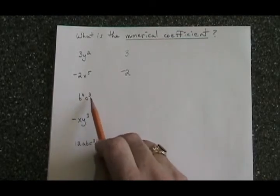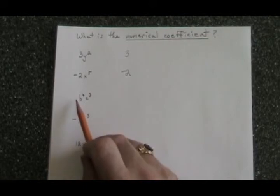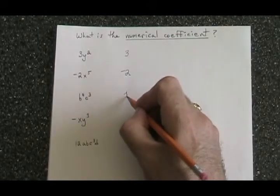In b⁴c to the 3, we don't see a number there. We have to know that that means there is a 1 there, so the numerical coefficient is 1.